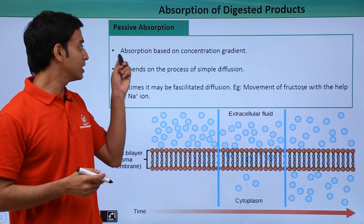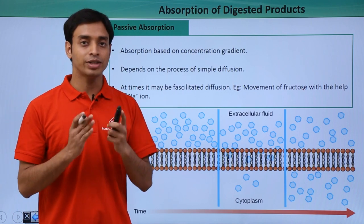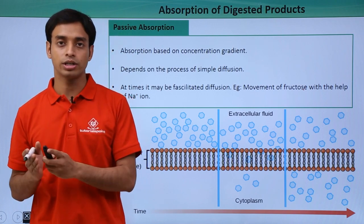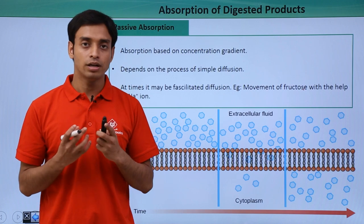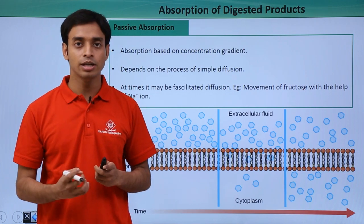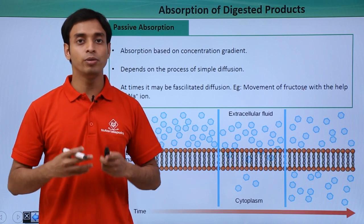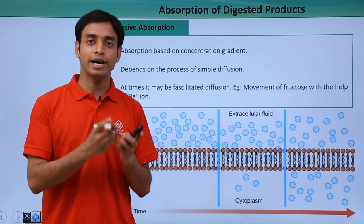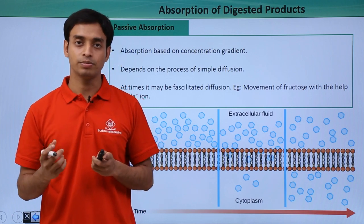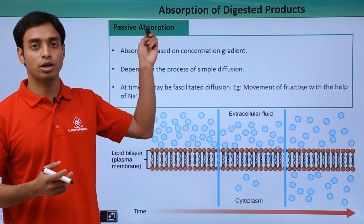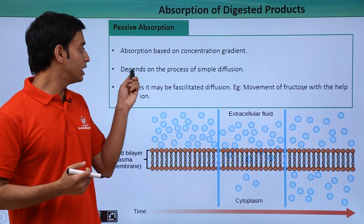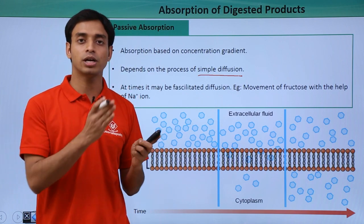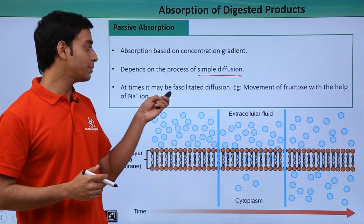Passive absorption is based simply on the concentration gradient — the movement of molecules or nutrients happens from higher concentration to lower concentration. When food has been digested, the concentration of nutrients in the intestine is higher than in the blood, so the nutrients move into the bloodstream. This is passive absorption, depending on simple diffusion along the concentration gradient.